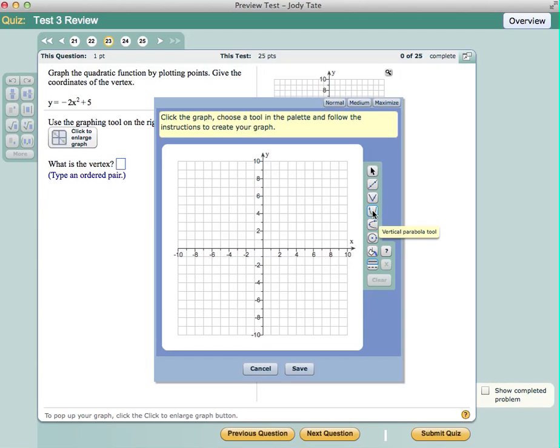So we'll have negative 2 times 2.25. And that gives us negative 4.5. And if we add 5 to this, we're going to get a y value of 0.5.